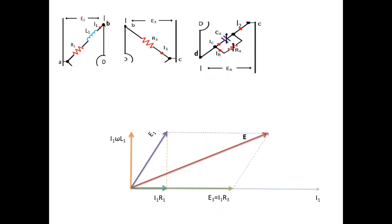The next arm, DC, has the capacitor and resistor connected in parallel. Therefore, the current in both these two parallel arms will be different, whereas the voltage will be same. This voltage E4 under balance condition will also be equal to E3, so it will be along the x-axis.